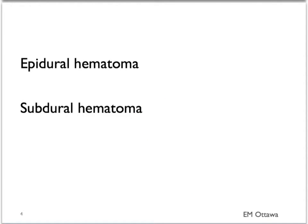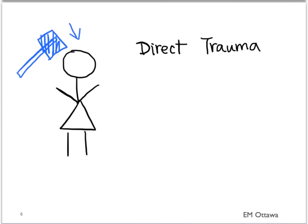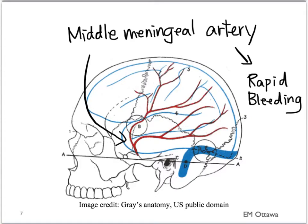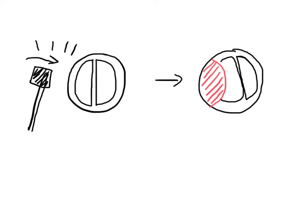We will now discuss the specific presentation of epidural and subdural hematoma. Epidural hematoma is caused by direct trauma to the area, specifically trauma to the temporal bone. Trauma to the temporal bone can cause disruption of the middle meningeal artery, shown here in red. Blood from the artery then rapidly accumulates, and the rapidly accumulated epidural hematoma then pushes the brain out of the way.